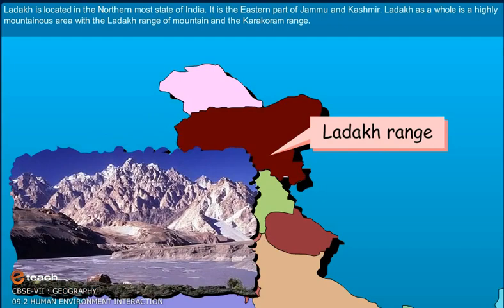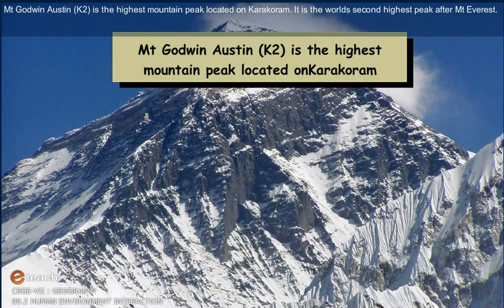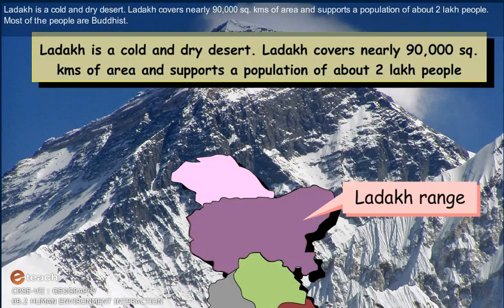Ladakh as a whole is a highly mountainous area with the Ladakh range of mountains and the Karakoram range. Mount Godwin-Austen, K2, is the highest mountain peak located on the Karakoram. It is the world's second highest peak after Mount Everest. Ladakh is a cold and dry desert.